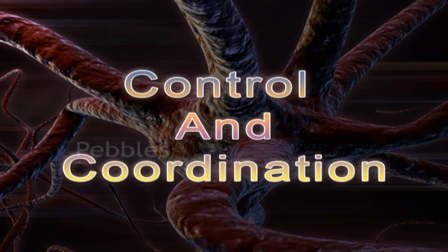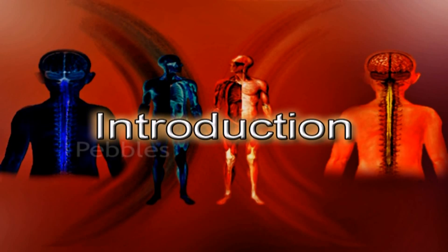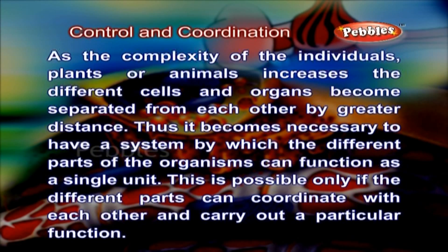Control and Coordination. As the complexity of individuals, plants or animals increases, the different cells and organs become separated from each other by greater distance. Thus it becomes necessary to have a system by which the different parts of the organisms can function as a single unit. This is possible only if the different parts can coordinate with each other and carry out a particular function.